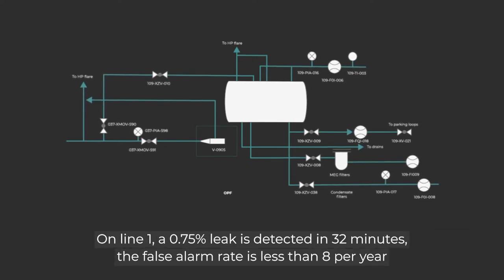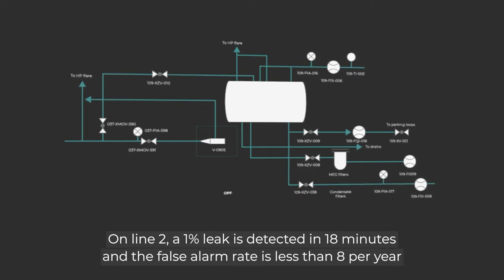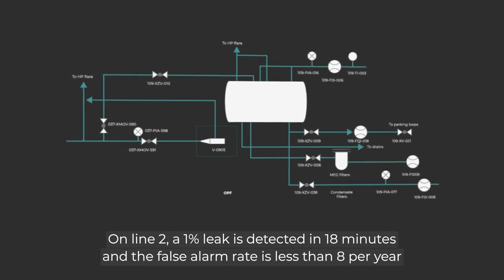On Line 1, a 0.75% leak is detected in 32 minutes, with false alarm rate less than 8 per year. On Line 2, a 1% leak is detected in 18 minutes, with false alarm rate less than 8 per year.